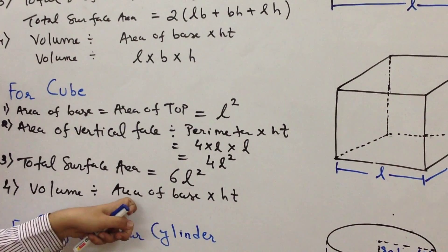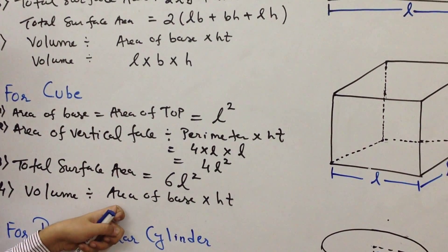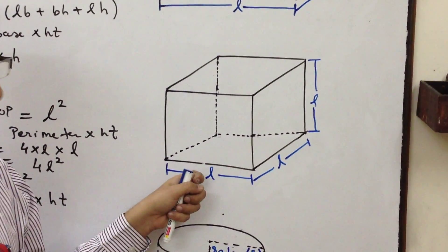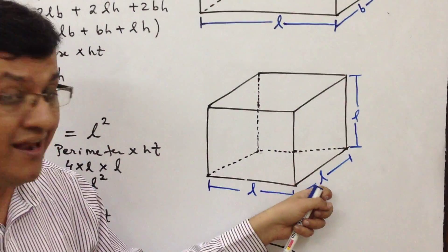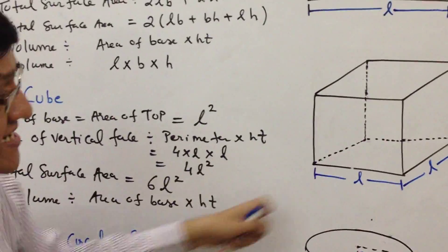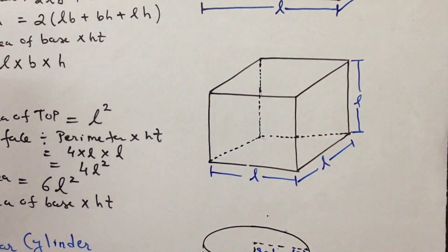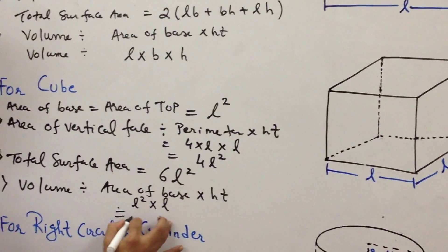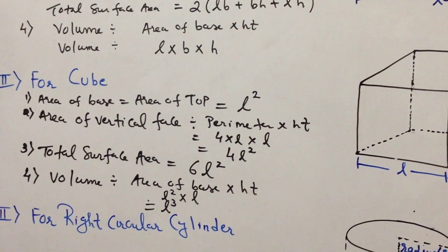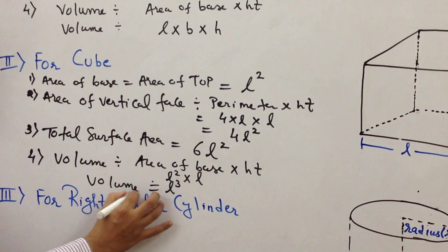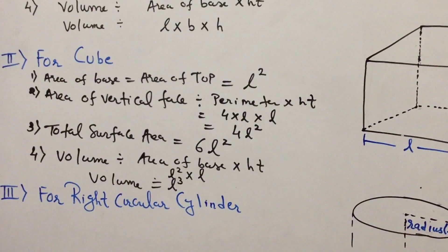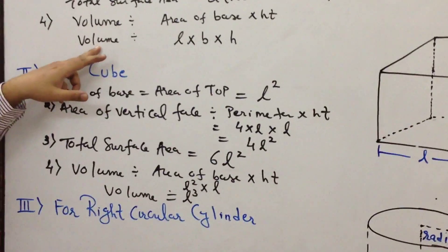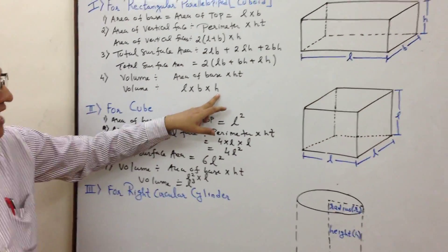The third formula is total surface area. There are 6 faces in total, and every face is a square with area L². So one face has area L², and 6 faces give 6 into L², which is 6L². Total surface area of a cube equals 6L².